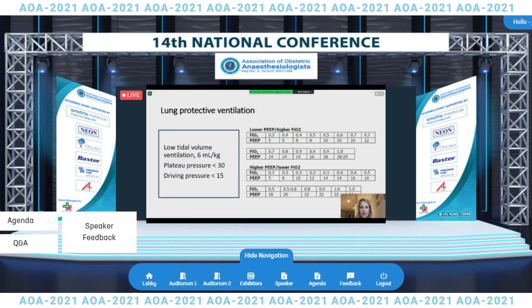In 1998, the first single-center randomized controlled trial provided support for the use of low tidal volume ventilation in ARDS. The investigators compared low tidal volume ventilation defined as 6 mL/kg with permissive hypercapnia, compared to conventional ventilation with a tidal volume of 12 mL/kg. They reported improved 28-day survival in the low tidal volume ventilation group, as well as reduced rates of barotrauma and increased rates of liberation from mechanical ventilation.